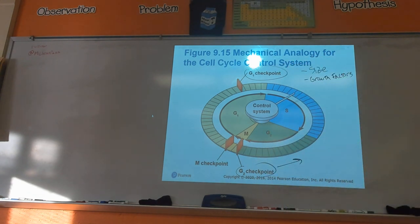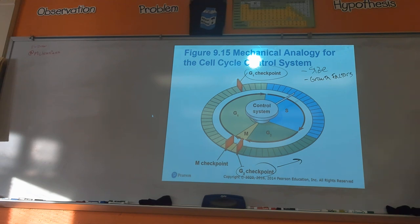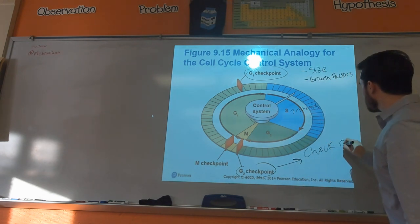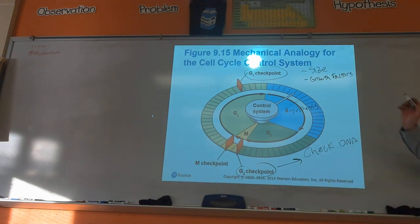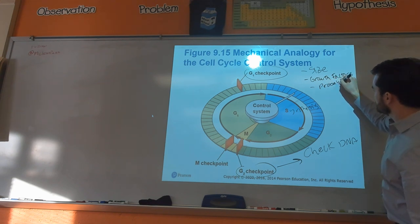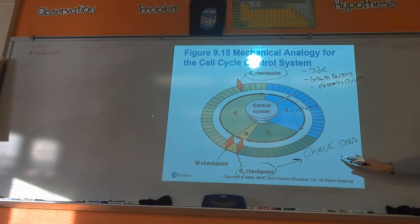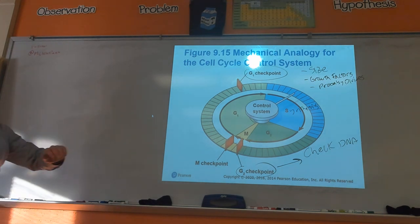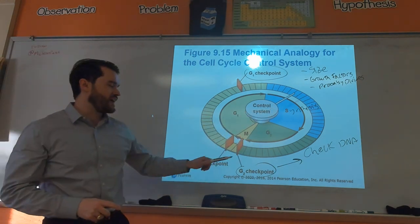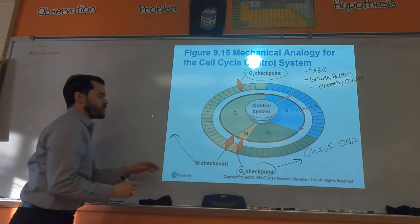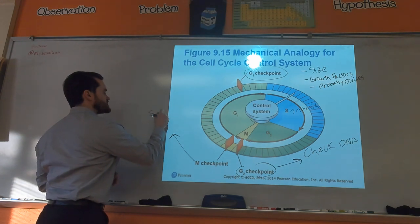At the G2 checkpoint, we check the DNA — because we just went through S phase where DNA was synthesized, so we verify it was copied correctly. G1 is the main checkpoint: if a cell passes G1, it probably will divide. DNA copying errors that would trigger the G2 checkpoint are actually pretty rare because DNA replication happens with very high precision.